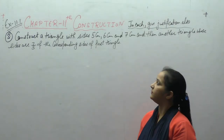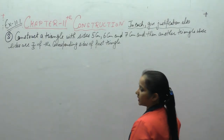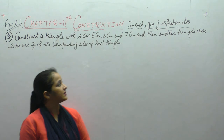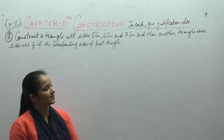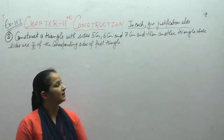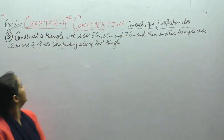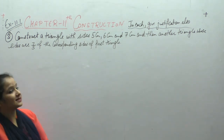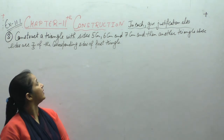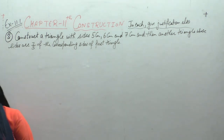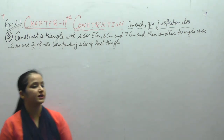Construct a triangle with sides 5 cm, 6 cm and 7 cm, then another triangle whose sides are 7/5 of the corresponding sides of the first triangle.